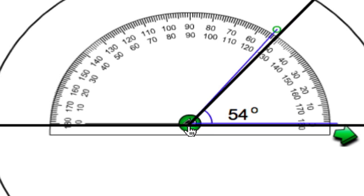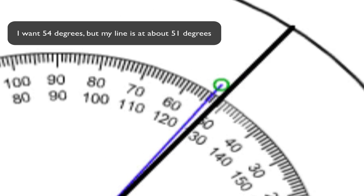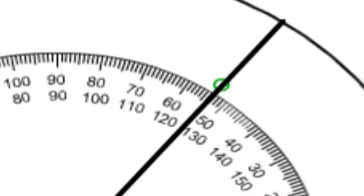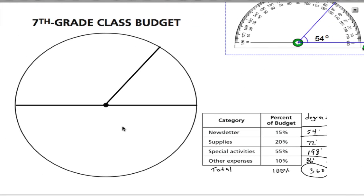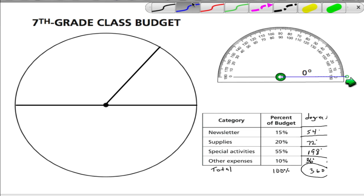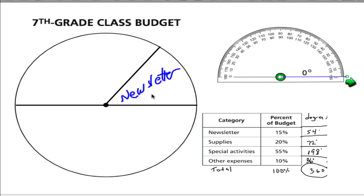A ruler will do that for us. Now if you notice, I'm a little bit off here. You want to be as accurate as possible. They give you three degrees of freedom on our test. But we'll try to be as accurate as possible. So now I have my first angle marked, 54 degrees, and that's for the newsletter category. Once you have the angle drawn out for your section, what you should do is label it. Give it the name of the category. This is our newsletter category, and put the percent or the degrees.